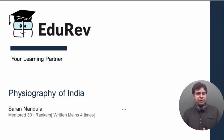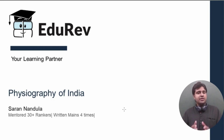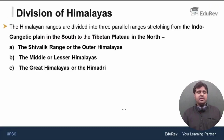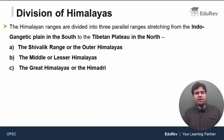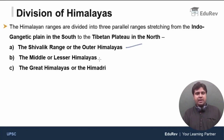We understood that the entire Himalayan region can be broken down into three distinct regions. First is the Himalayan ranges, second is the Trans-Himalayas, and the third one is the Eastern Hills or Purwanchal. The Himalayan ranges are divided into three parallel ranges: the Shivaliks or the outer Himalayas, the middle Himalayas or the lesser Himalayas, and the great Himalayas or the Himadri.